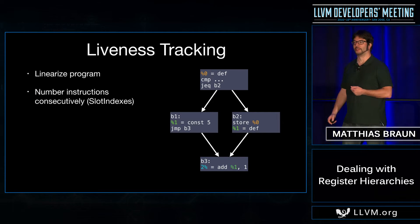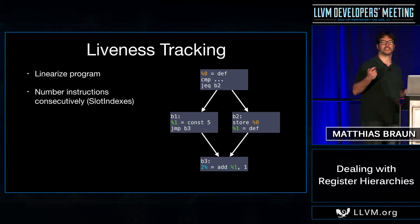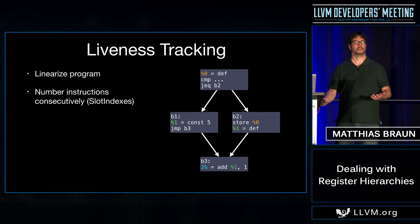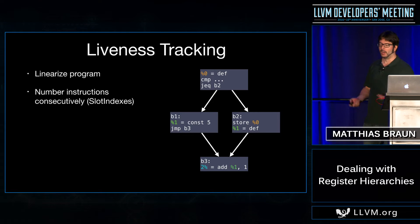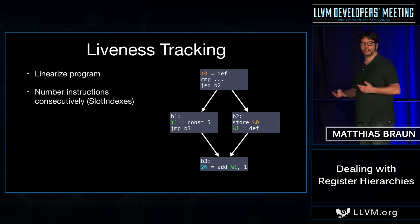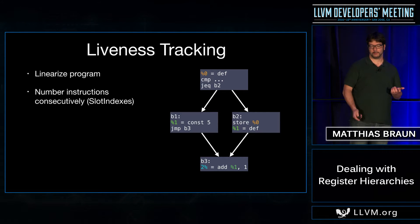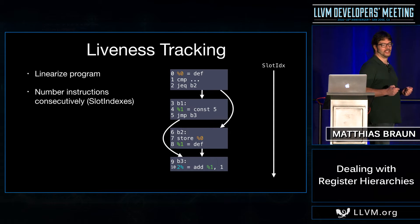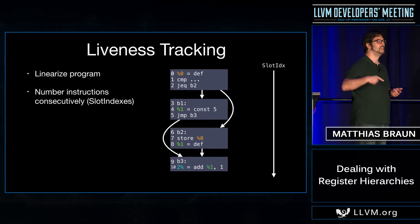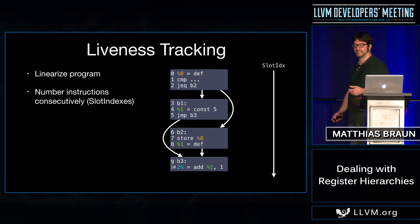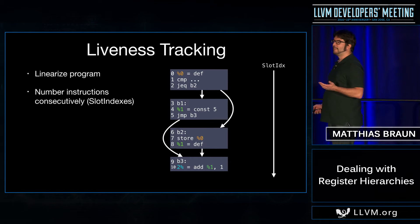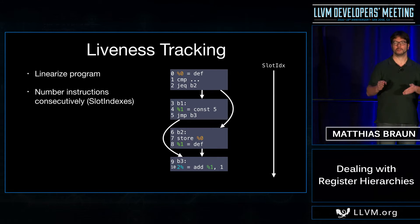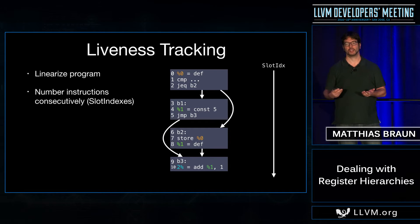Let's review another basic of register allocation: liveness tracking. We need to record at what point in the program a variable is live — when it contains a value that will be reused later and needs to stay in a register. In LLVM, this is solved by first linearizing the program and assigning a number to each instruction. This allows us to represent any point in the program with a single number. Liveness can then be represented as intervals with a beginning and end point. We might have multiple intervals for a single variable.